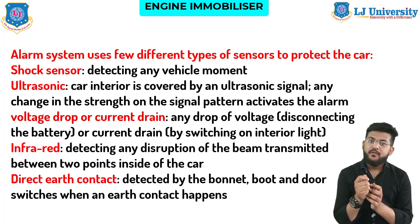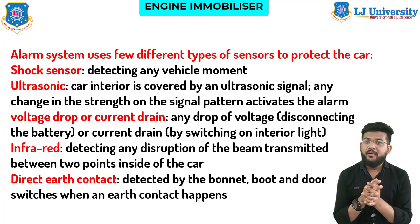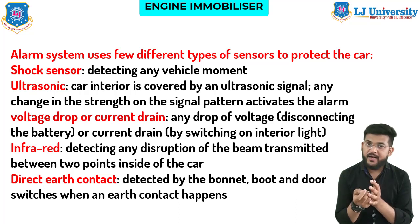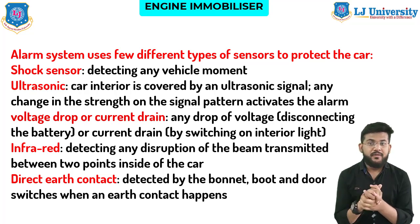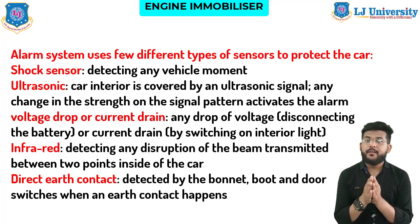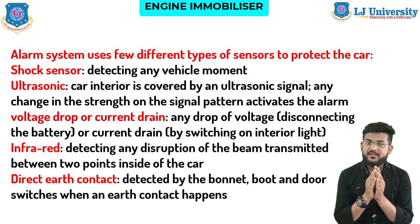The alarm system uses several types of sensors to protect the car: a shock sensor detecting any vehicle movement; an ultrasonic sensor that covers the car interior — any change in signal pattern activates the alarm; a voltage drop or current drain sensor that activates the alarm if the battery is disconnected or interior lights switch on; infrared sensors that detect any disruption of a beam transmitted between two points inside the car; and direct earth contact detected by bonnet, boot, and door switches.